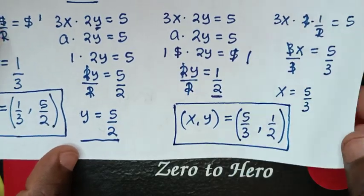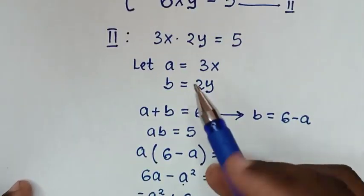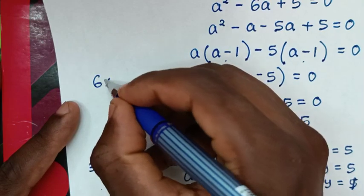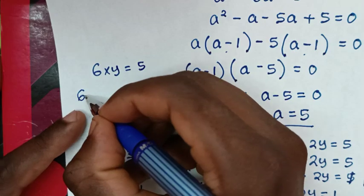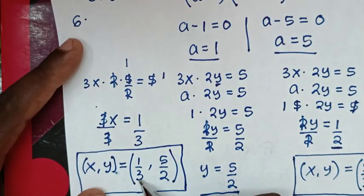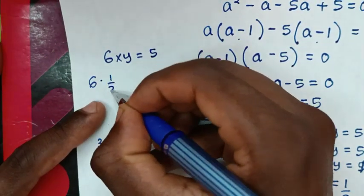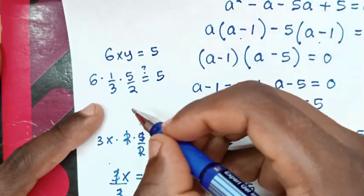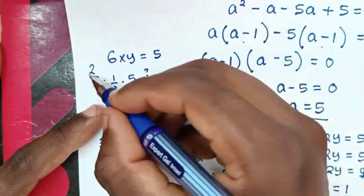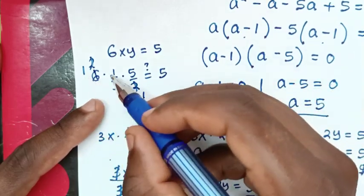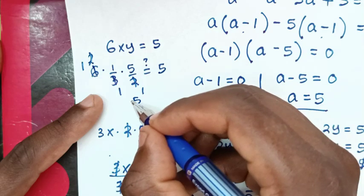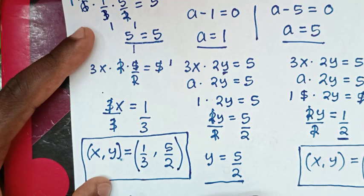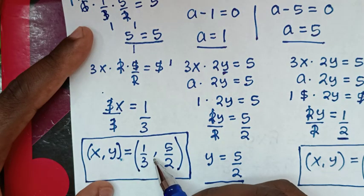To check if our solutions are correct, we use the second equation 6xy equals 5. For the first solution, substituting x equals 1 over 3 and y equals 5 over 2: 6 times (1/3) times (5/2). The 3 cancels with 6 to give 2, and the 2 cancels with 2 to give 1, so we get 1 times 5 over 1 equals 5. Left side equals right side, so it is confirmed true for x equals 1/3 and y equals 5/2.